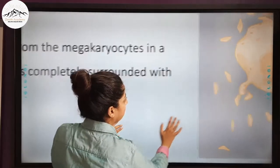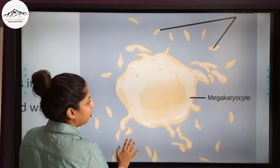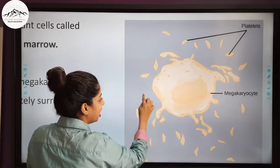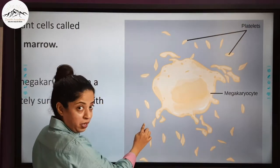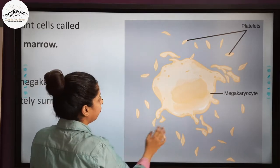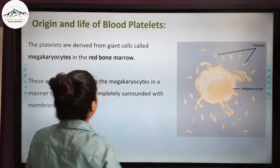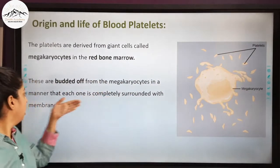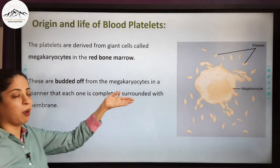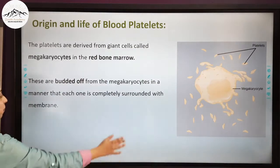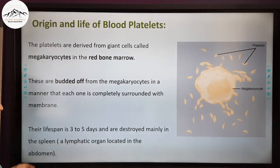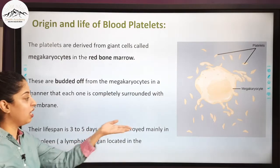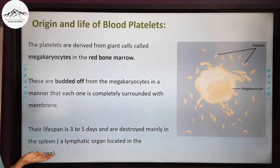These platelets are budded off from the megakaryocytes in a manner that each one is completely surrounded with a membrane. Their life span is around 3 to 5 days only.